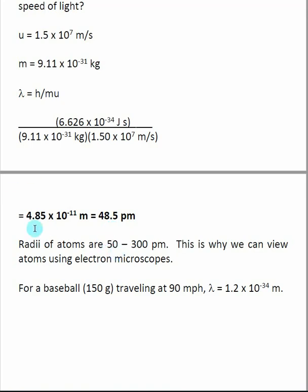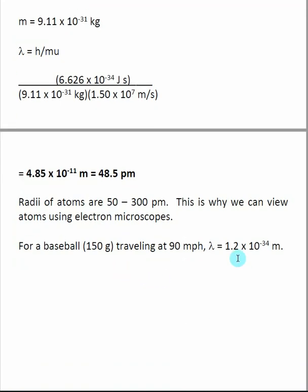Anything with a mass that is moving has an associated wavelength, but unless it's very small and moving very fast, the wavelength becomes uncomprehendable. Another example: if I have a baseball that weighs about 150 grams, and it's being thrown at 90 miles per hour, the baseball actually has a wavelength, but that wavelength is very small. I calculated a wavelength of 1.2 times 10 to the minus 34th meter. So the baseball does have a wavelength, but the wavelength is so small that we really can't even comprehend it.